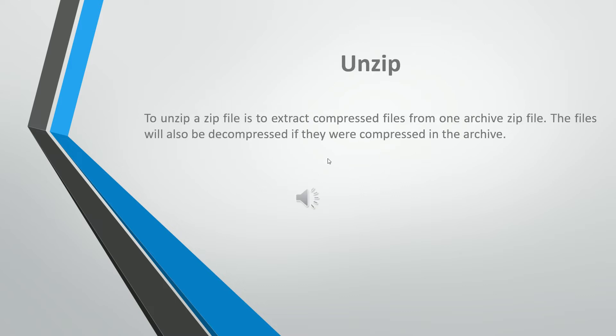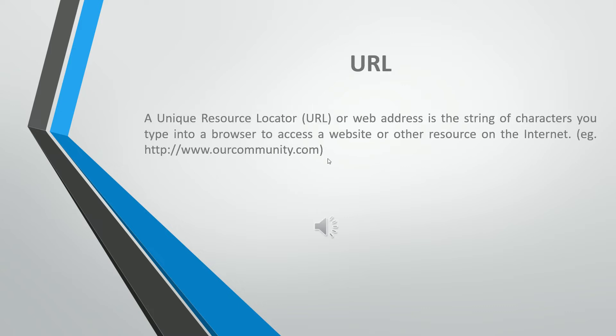To unzip a zip file is to extract compressed files from one archive zip file. The files will also be decompressed if they were compressed in the archive. The unique resource locator (URL), or web address, is the string of characters you type into a browser to access a website or other resource on the internet. For example: http://www.community.com.